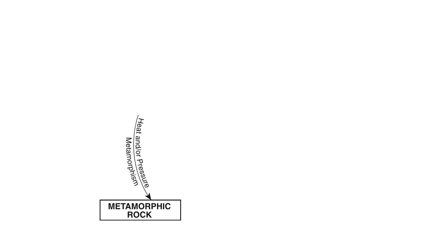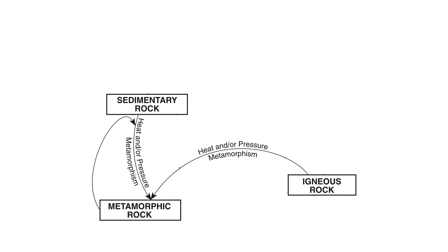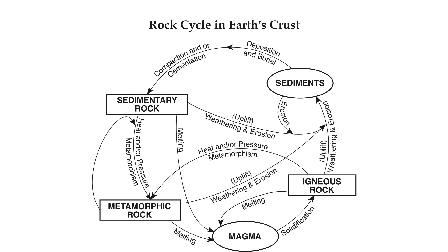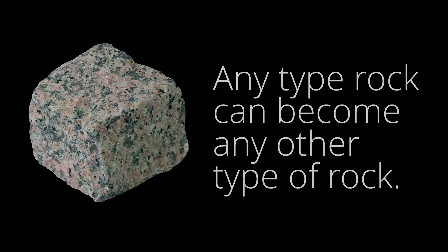Finally, we have our metamorphic rock. These form when rocks are exposed to intense heat and pressure. But of course, that process can take place with any type of rock — sedimentary, igneous, or even metamorphic rocks. So the key idea behind the rock cycle is the fact that any rock can become any other kind of rock. It can even become itself. Change is always taking place.